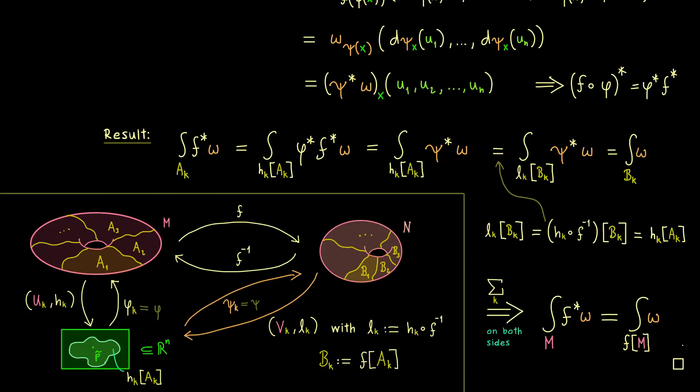And you can see where the change of variables formula comes from. It's simply the substitution with the function f in an abstract setting. And why this formula is so useful we will definitely see in future videos. So I really hope we meet again and have a nice day. Bye bye.